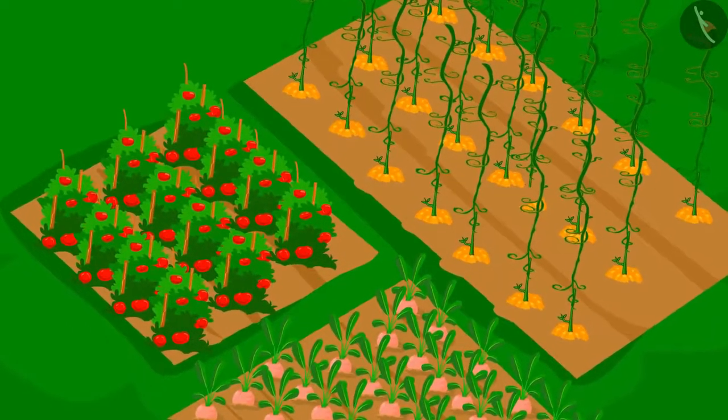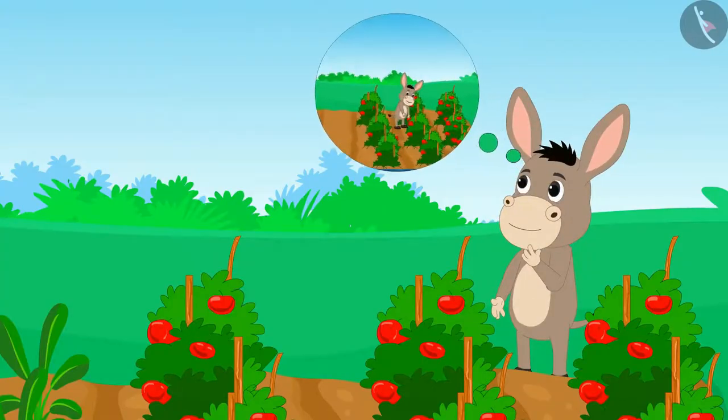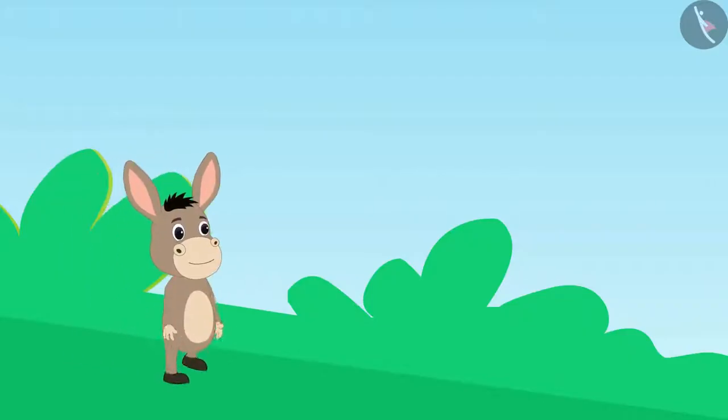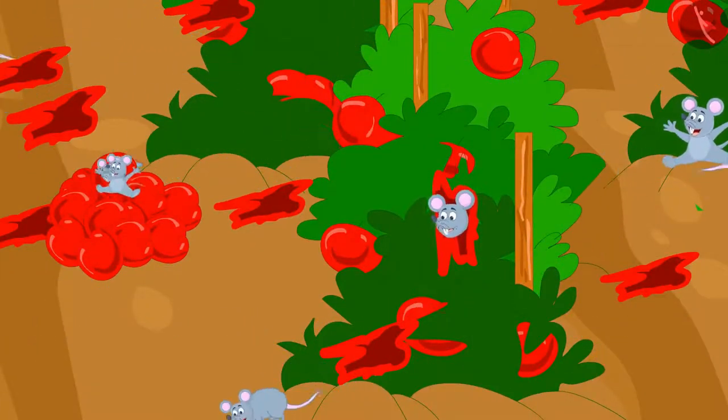Bhola's farm has had a very good crop this time. He thought he would come back the next day and harvest his crop. The next day, when Bhola reached his farm, he saw that mice had created havoc there.